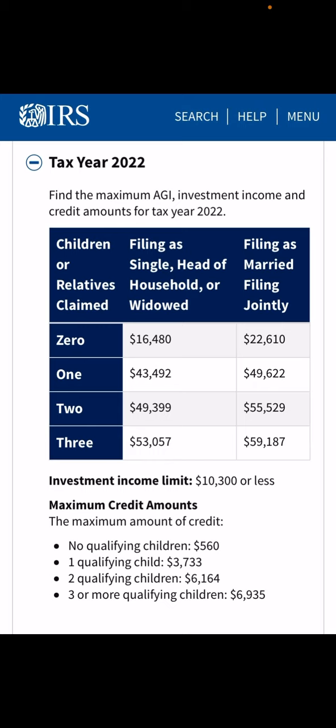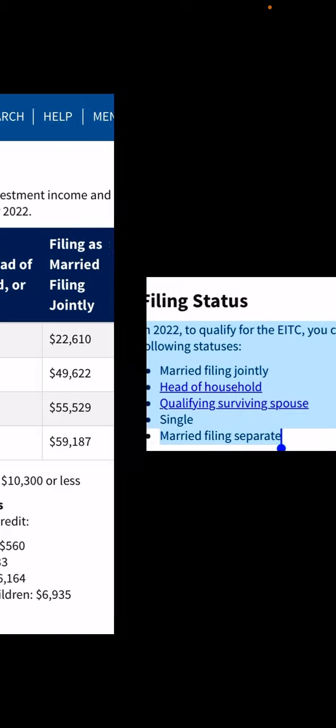For three or more children, the income limit is $53,057; married filing jointly it is $59,187. The maximum credit with no qualifying children is $560. One qualifying child is $3,733. Two qualifying children is $6,164. Three or more qualifying children is $6,935.